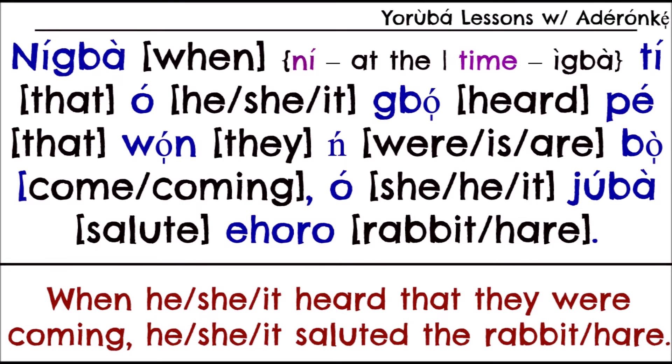'Nigba' is a combination of two words: 'ni' and 'igba.' 'Ni' is a preposition meaning at or in, and 'igba' means time — it can also mean period or season. So 'nigba' means 'at the time' or simply 'when.' Those are essentially the same thing: 'at the time that' or 'when.'